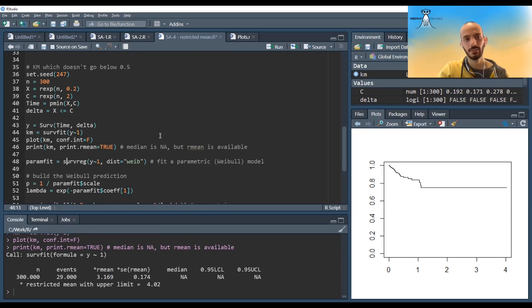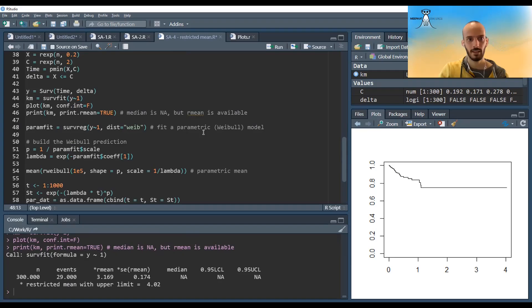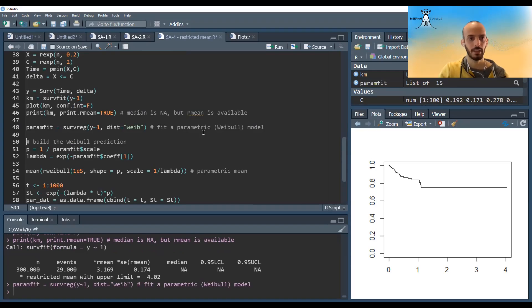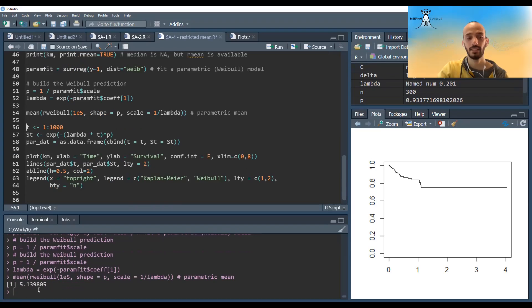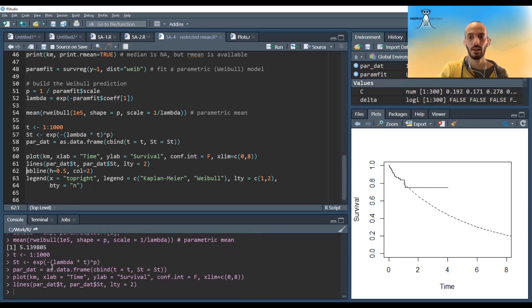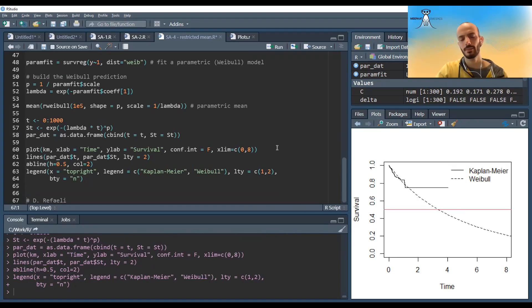And what we can also do is, for example, fit a parametric model. So here I will fit a Weibull parametric regression. It doesn't matter how exactly - I will cover this in a future video. But I can calculate the mean of this parametric model, and I can also plot it and look at the median, or I can also calculate the median in other ways. Okay, so this is all for this video. I hope you enjoyed and see you in the next one.